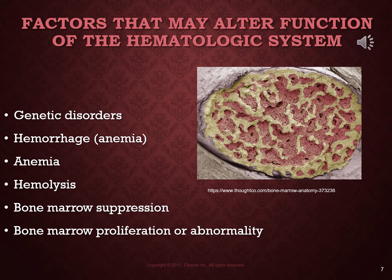Hemolysis, the destruction of red blood cells, can come from a transfusion reaction or hemolytic anemia. Bone marrow suppression can happen for many different reasons: anti-neoplastic drugs and radiation given to fight cancer can induce it, certain toxic chemicals can be very dangerous to the bone marrow, and adverse drug reactions — such as to certain diuretics or antiarrhythmic drugs — can cause really severe bone marrow suppression. A bone marrow abnormality, such as leukemia or multiple myeloma, is also a disease process that can alter hematologic function.